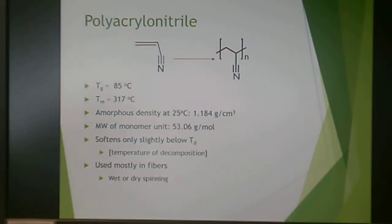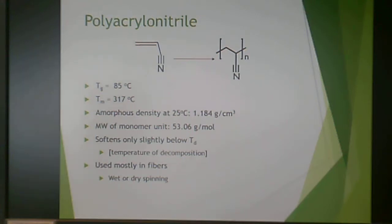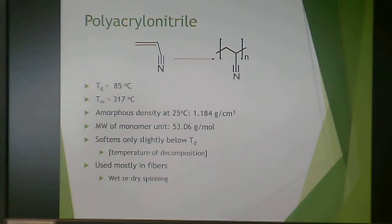First, we'll talk about polyacrylonitrile. This has a Tg of 85°C, well above room temperature, and a melting temperature of 317°C. It only softens slightly below its Td — temperature of decomposition — so it isn't used very typically. It's mainly used in production of fibers by wet or dry spinning, and is not typically used in injection molding grade materials.